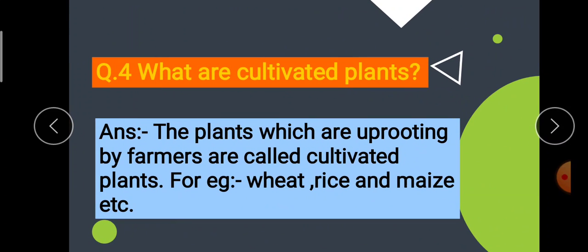Question number 4 is, what are cultivated plants? Question है कि cultivated plants क्या है? तो answer है बेटा, the plants which are uprooting by farmers are called cultivated plants. For example, wheat, rice and maize, etc.